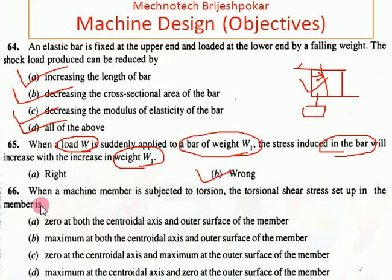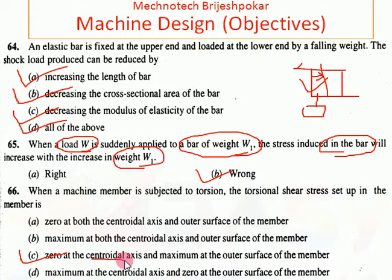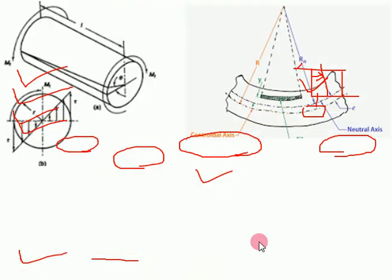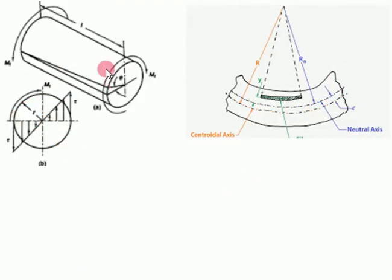When a machine member is subjected to torsion, the torsional shear stress is zero at the central axis and maximum at the outer surface of the member. You can see in the figure: maximum stress is at the outer side and zero at the center.